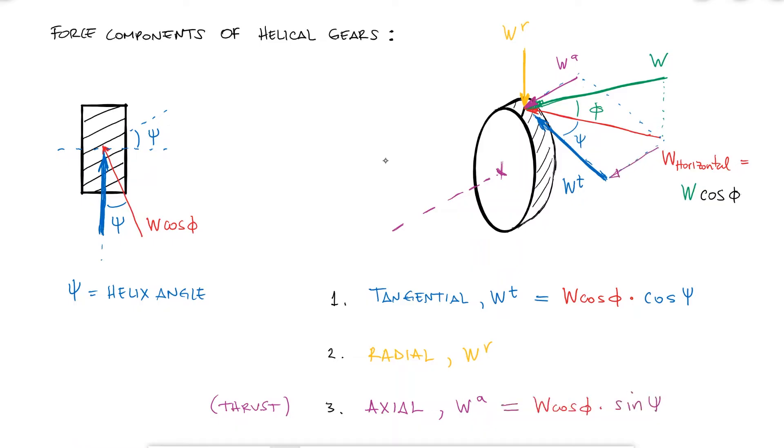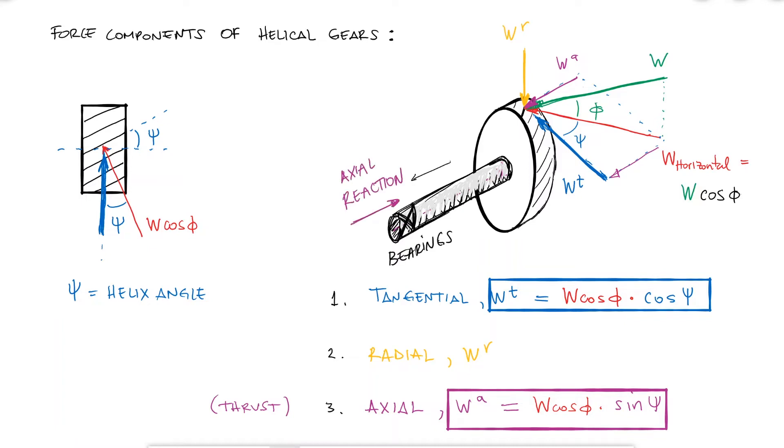And the opposite side, and therefore the component using the sine for the axial component. As I mentioned in a previous video, these axial components will try to move the shaft on its axis, and the bearings must counteract them. These axial loads will also be of much importance when selecting or designing bearings.